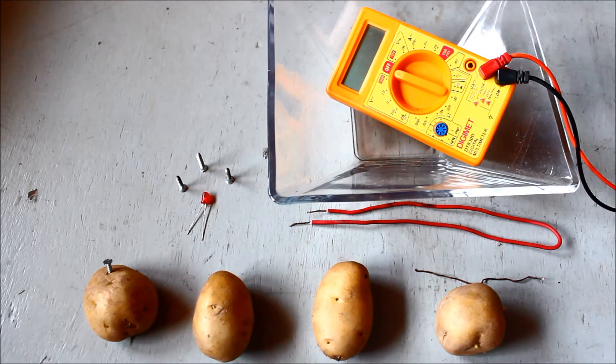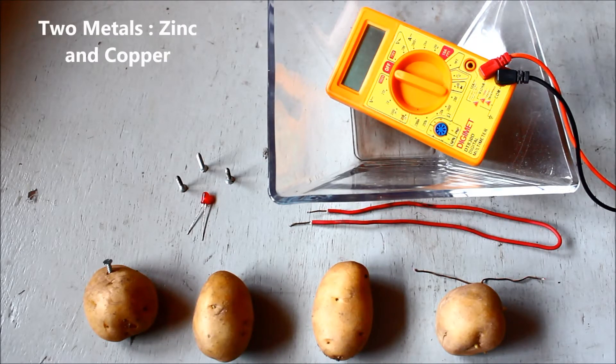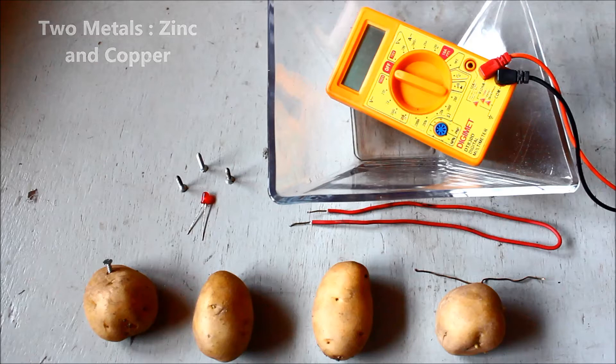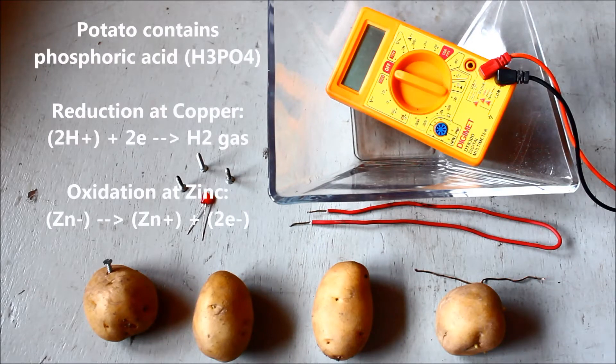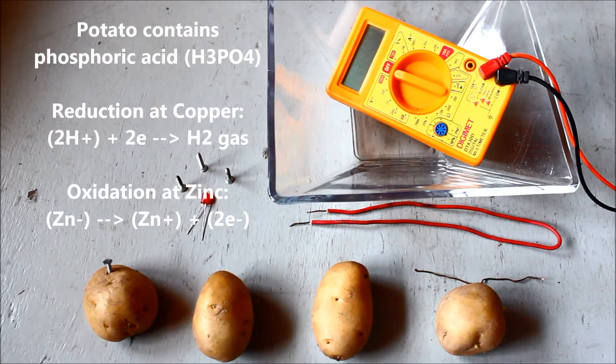In this case, we will be using two different metals, that is copper and zinc, which will be immersed into potato which contains different types of acids. And this will generate a flow of electricity, and then we will be using that electricity to glow an LED.